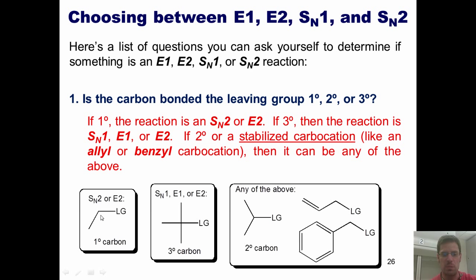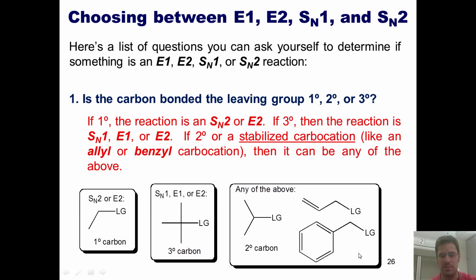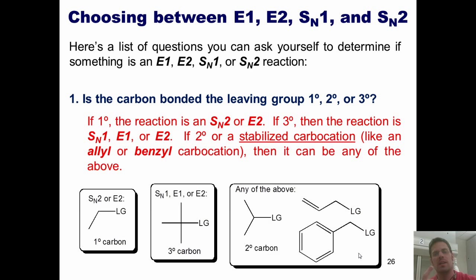All of this is summarized in this figure. Leaving group stuck to a primary carbon: SN2 or E2, done. If it's stuck to a tertiary carbon: SN1, E1, or E2. And if it's secondary or stabilized, it could be any of the above. If you're still in an ambiguous circumstance after question one, go to the next question.